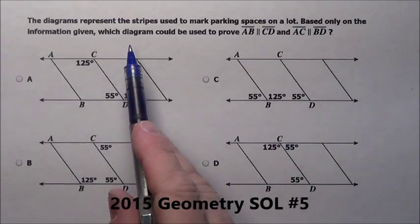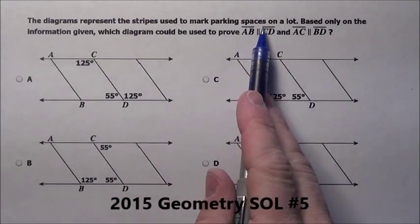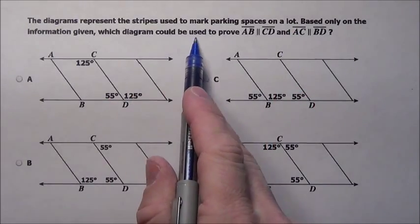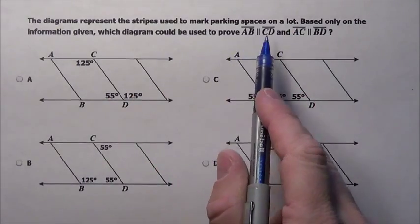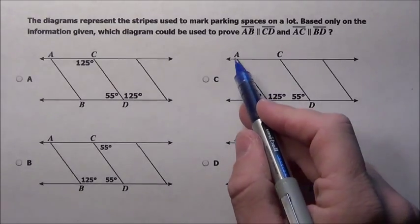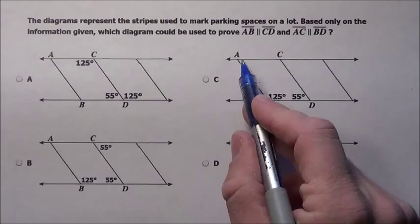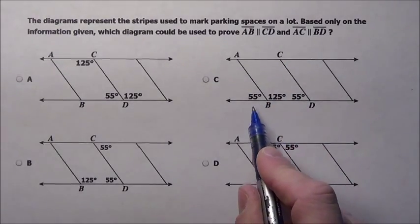Here's problem 5. It says the diagrams represent the stripes used to mark parking spaces in a parking lot. Based only on the information given, which diagram could be used to prove that AB is parallel to CD and that AC is also parallel to BD?